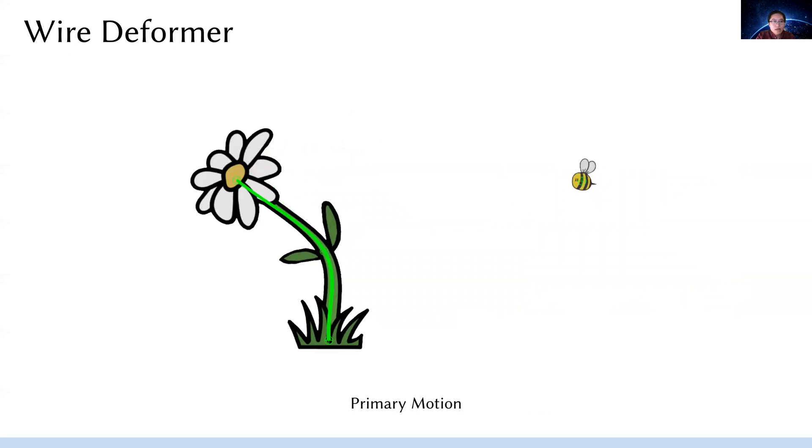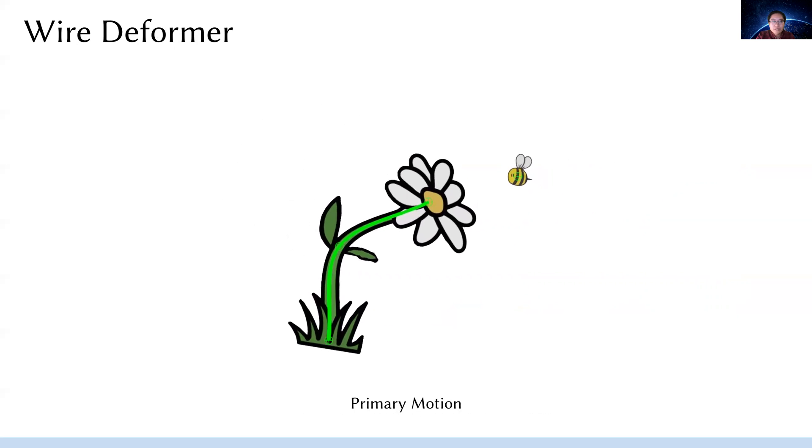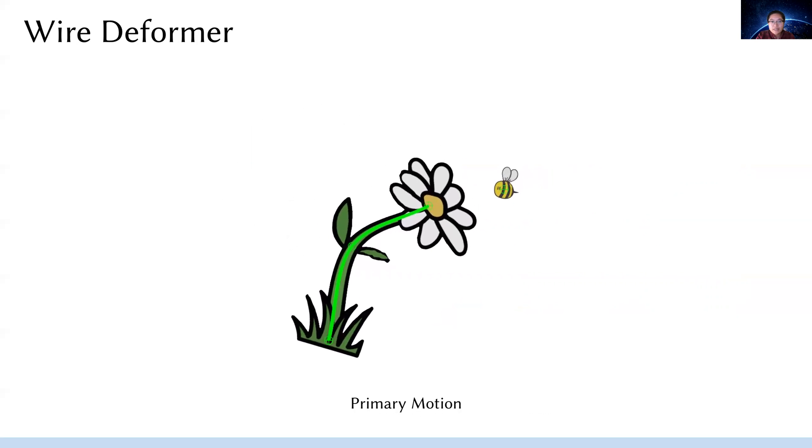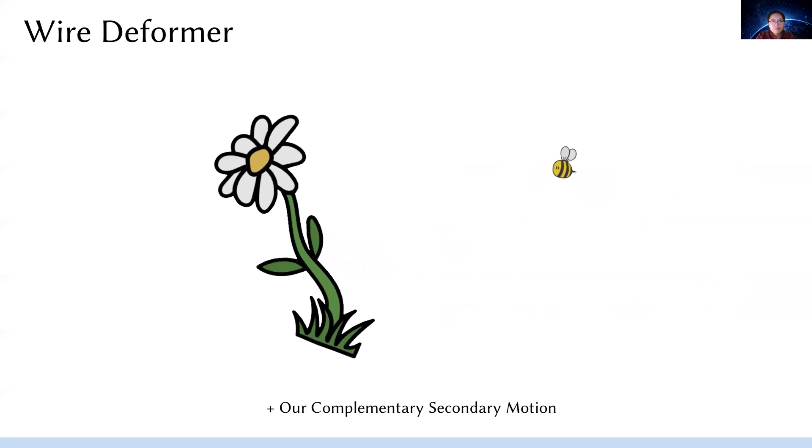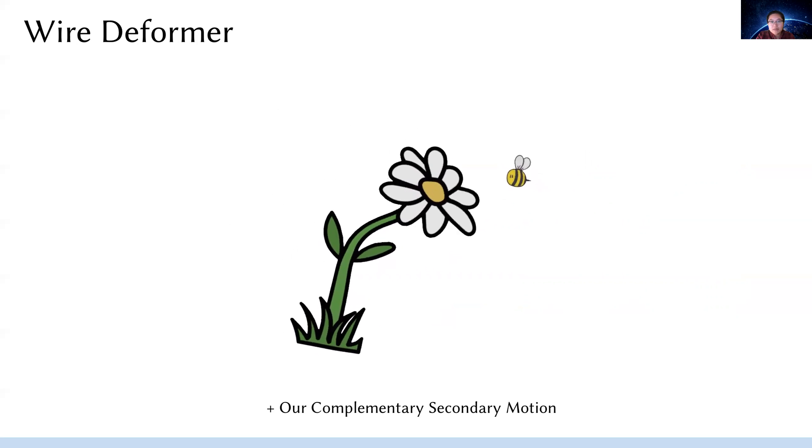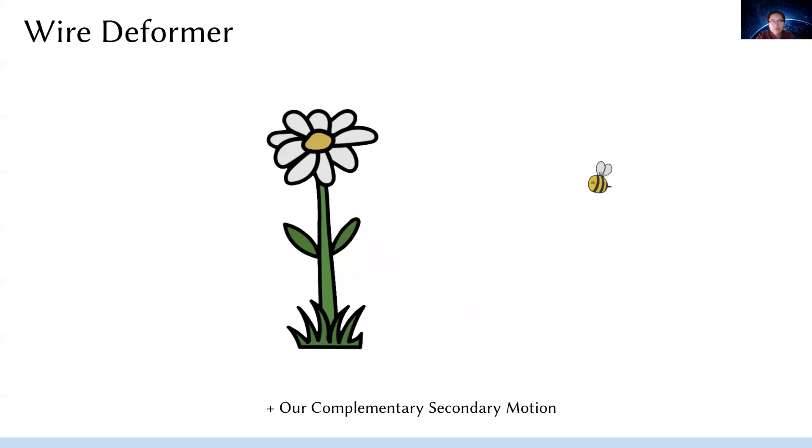As I mentioned before, our method also works for the nonlinear rig, like this daisy flower rigged by Catmull-Rom spline. See how this daisy becomes cheerful when the bee is coming close to it.